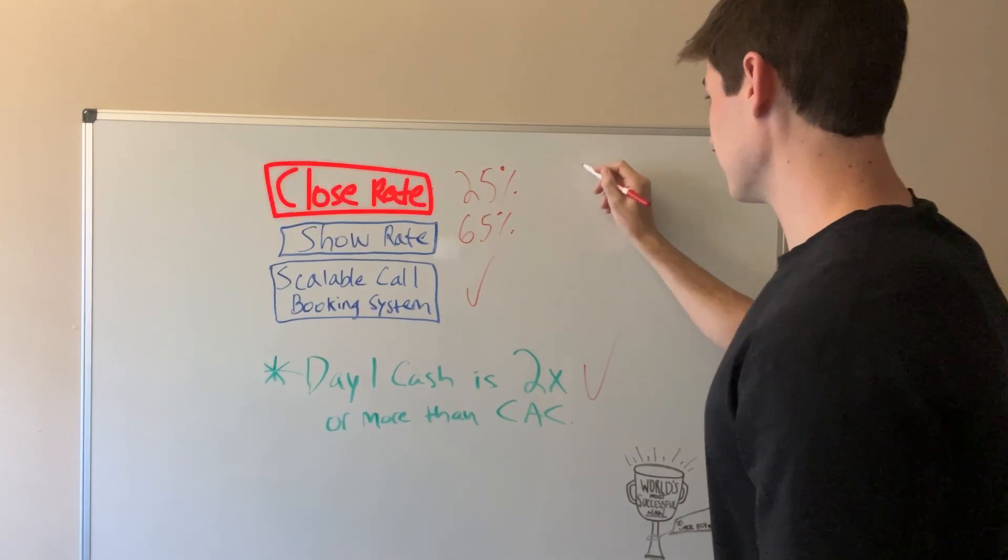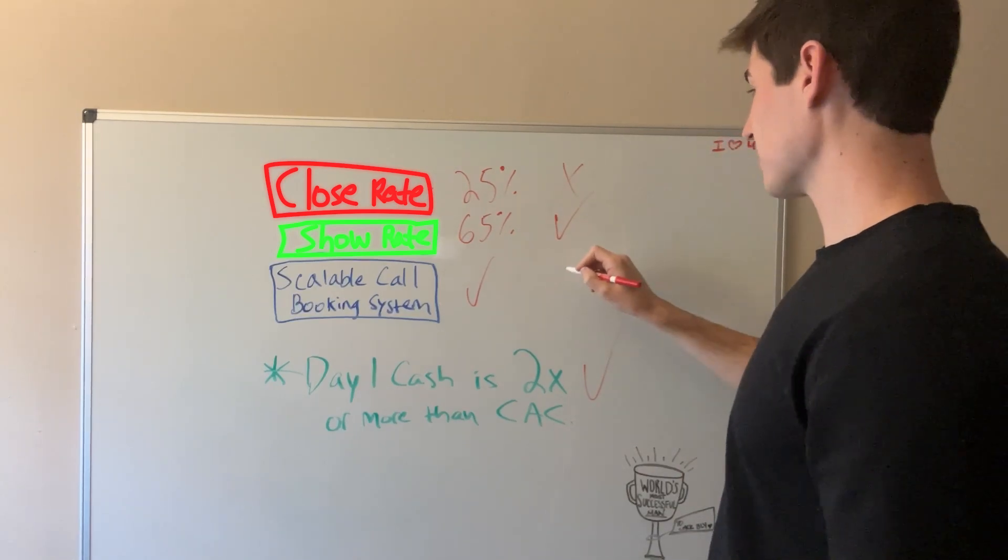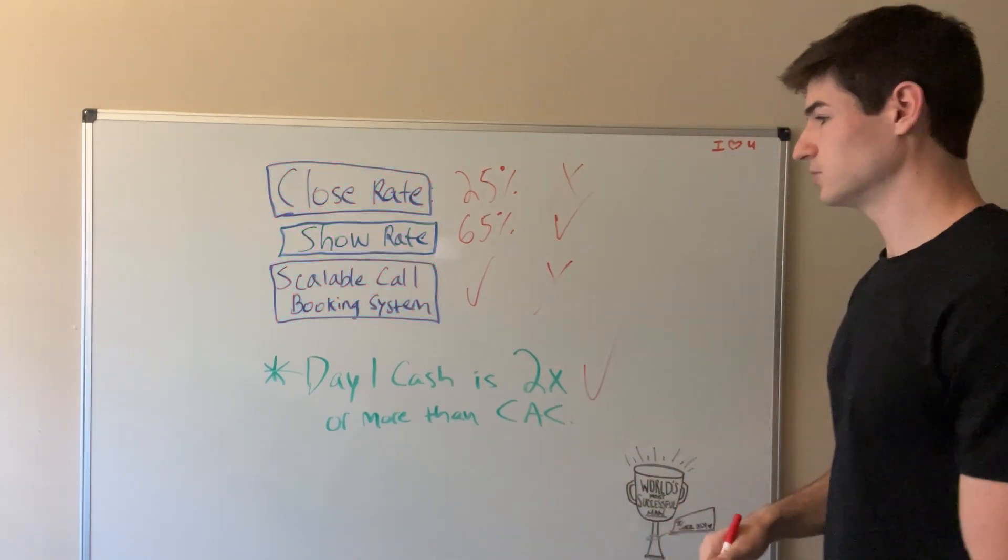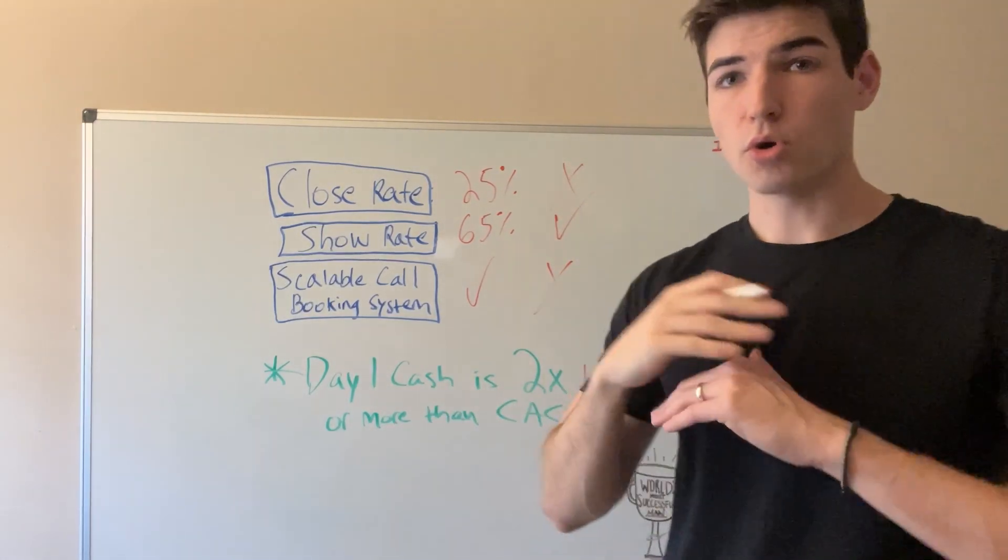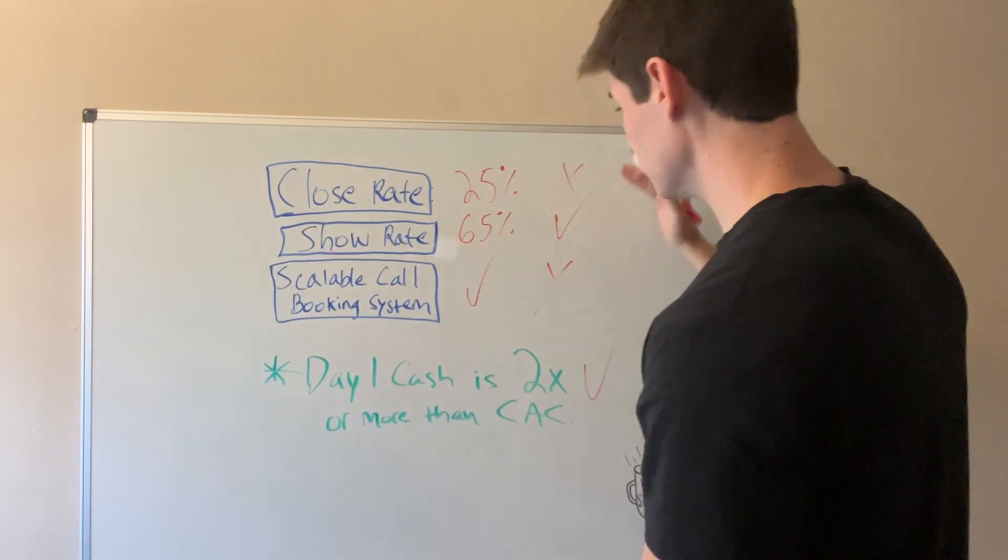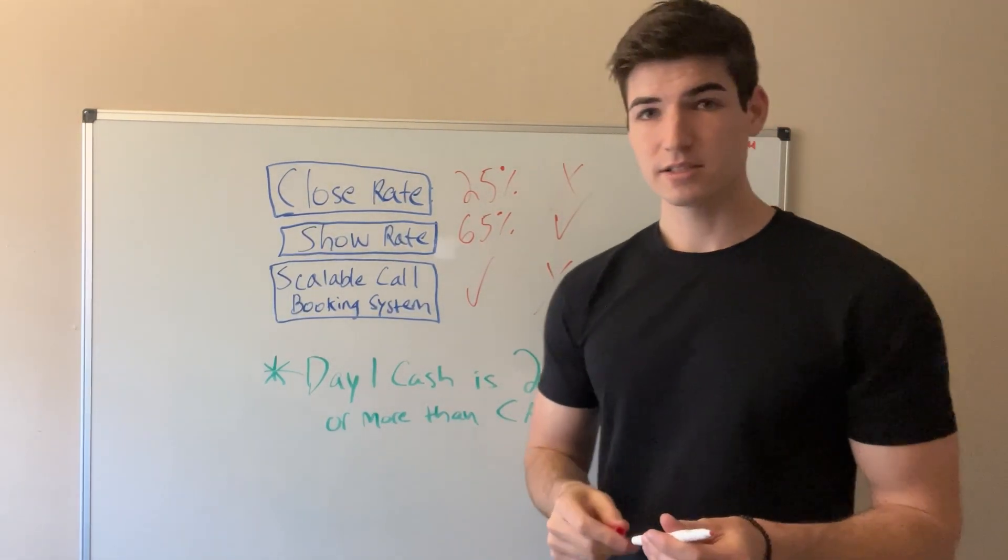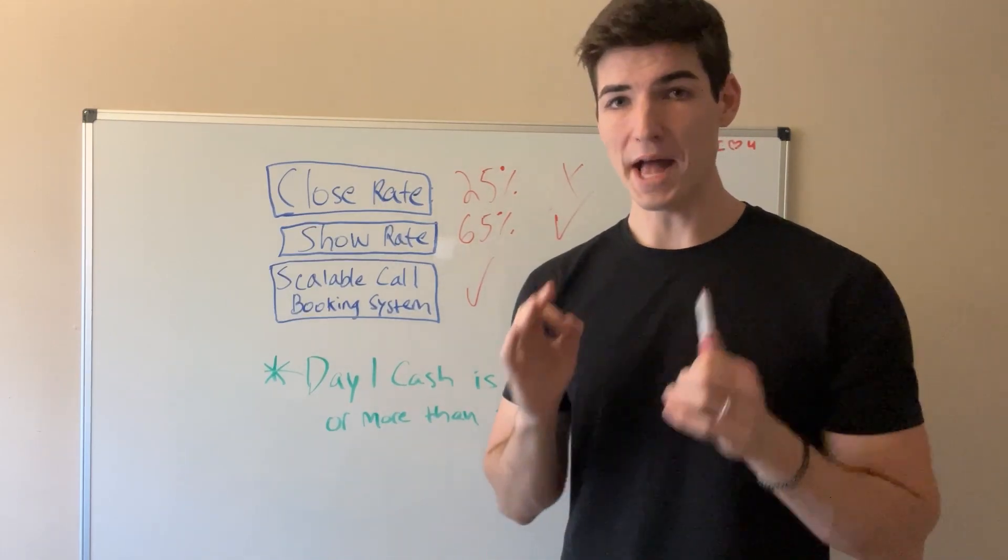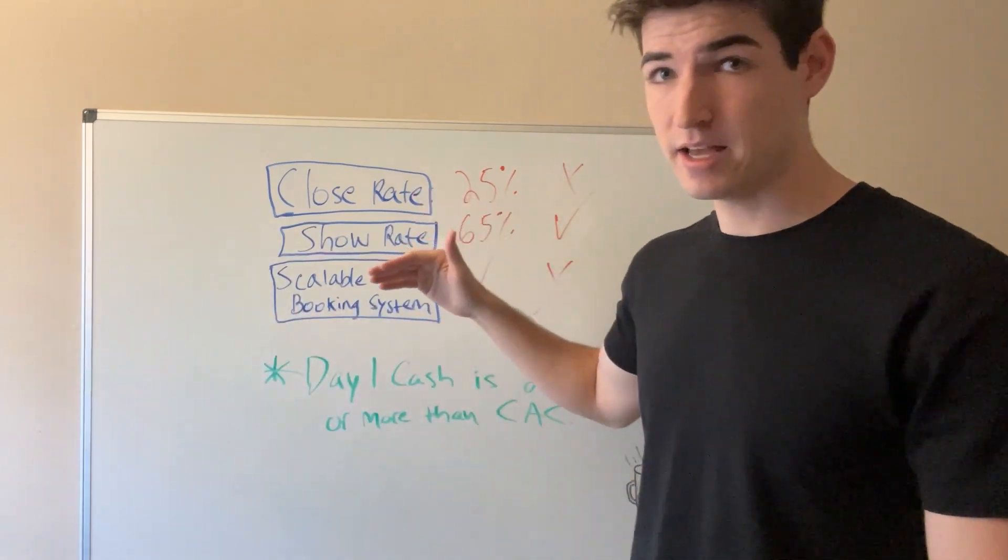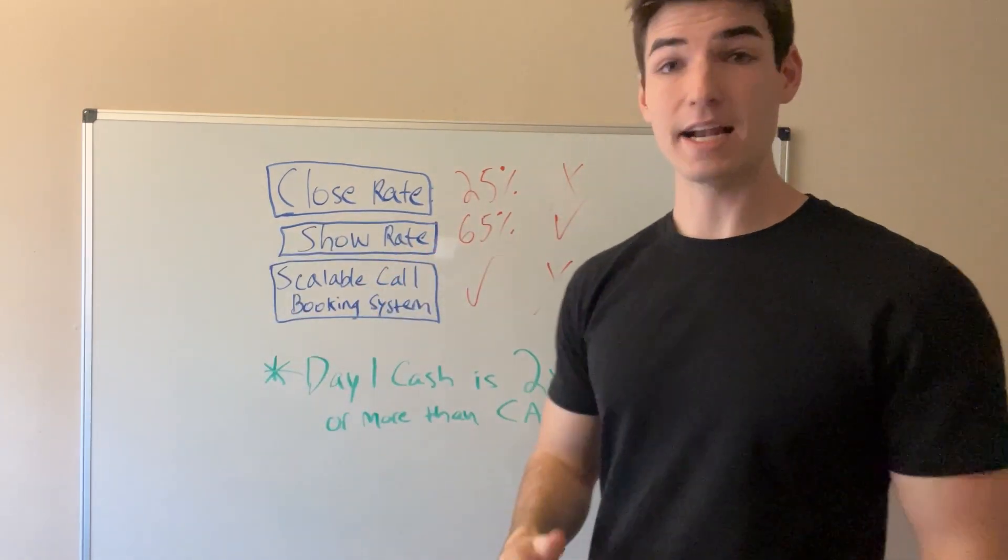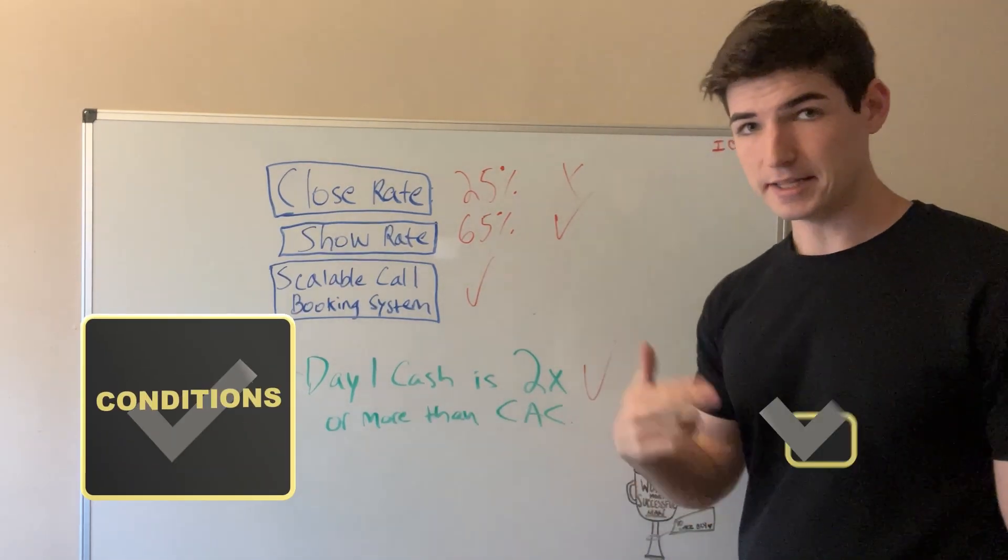Is your close rate there? If not, you have X. That's the bottom line. Your show rate here. Okay, cool, that's good. You don't have a scalable call booking system. So X. Now we know we need this in order to scale. Those are your only priorities. Your only focus is getting these conditions so you can scale. So now you know what to work on. Put all of your efforts on these things. Please do nothing else. Literally nothing else besides these things to find these conditions in your business. If you want to scale a business, this is what you have to do. Conditions and then do more volume. That is how you hit six figure months.